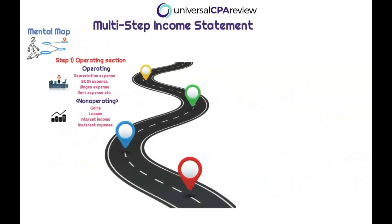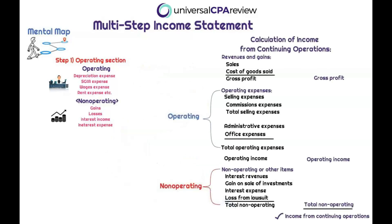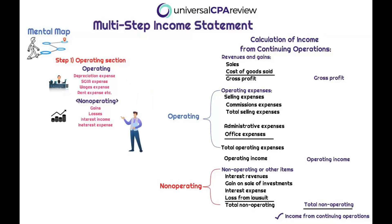Step one in our mental map is understanding that we're first calculating income from continuing operations. Income from continuing operations includes two sections: the operating section and the non-operating section. The operating section includes operating revenues and operating expenses — essentially everything in the ordinary course of business — such as depreciation expenses, SG&A, wages expenses, rent expenses, etc.